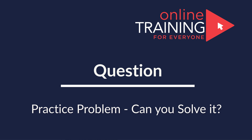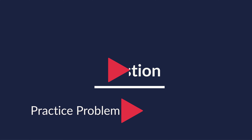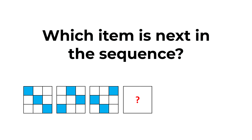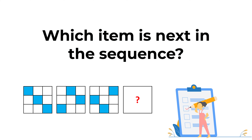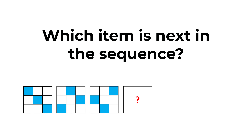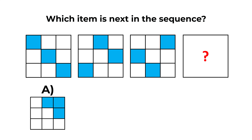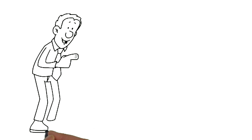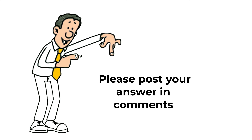Now here's a practice question for you. You need to determine which item comes next in the sequence. You're presented with three large squares, each containing nine small squares of different colors. The fourth square is missing, and you have four choices: A, B, C, or D. Post your solution and rationale in the comments so I can give you feedback.